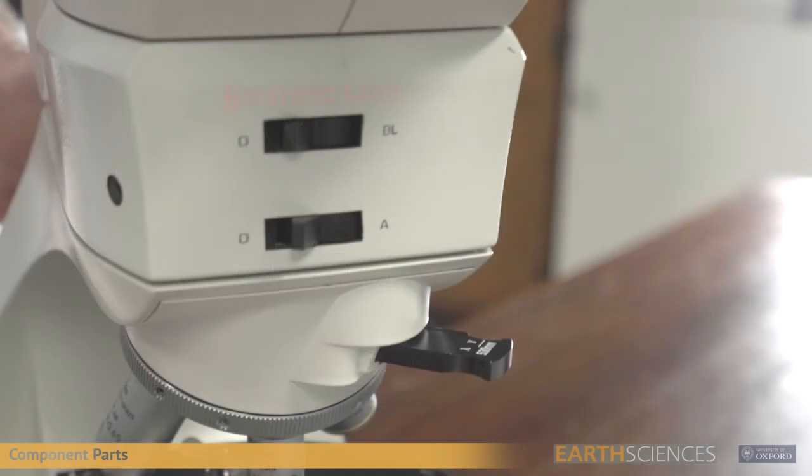Additionally, between the binocular viewing tube and objectives is the Bertrand lens, analyzer, and wave plate.